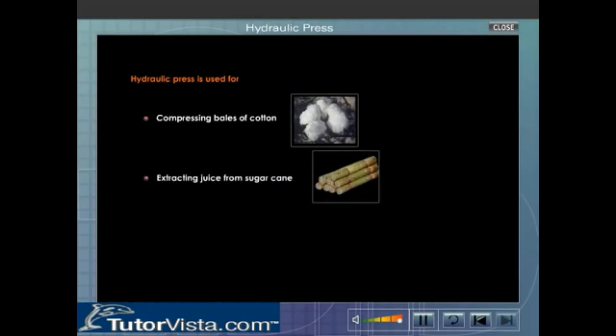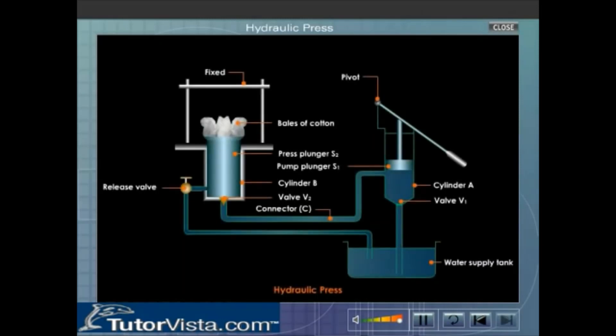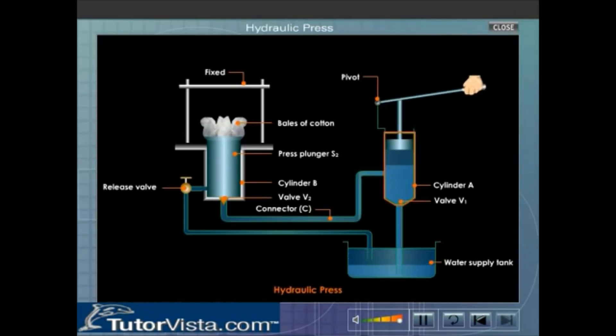Hydraulic press is used for compressing bales of cotton, extracting juice from sugarcane, and extracting oil from cotton seeds. Here you can see how a hydraulic press is used for compressing bales of cotton. When the pump plunger S1 is raised with the help of the lever, the pressure inside cylinder A decreases and as a result the valve V1 opens upwards and water from the tank is pushed into cylinder A.